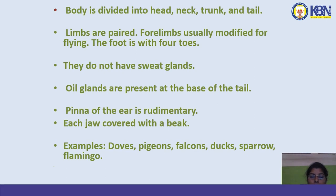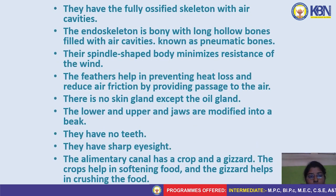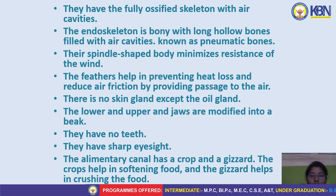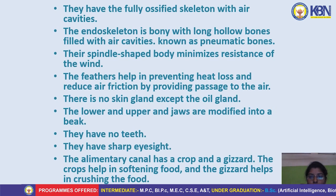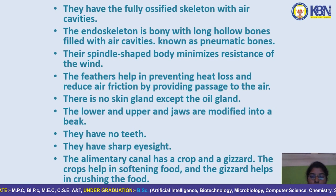Each jaw is covered with a beak. Examples include doves, pigeons, falcons, ducks, sparrow, and flamingo. They have a fully ossified skeleton with air cavities. The endoskeleton is bony with long hollow bones filled with air cavities, known as pneumatic bones. Their spindle-shaped body minimizes wind resistance. The feathers help in preventing heat loss and reducing air friction.